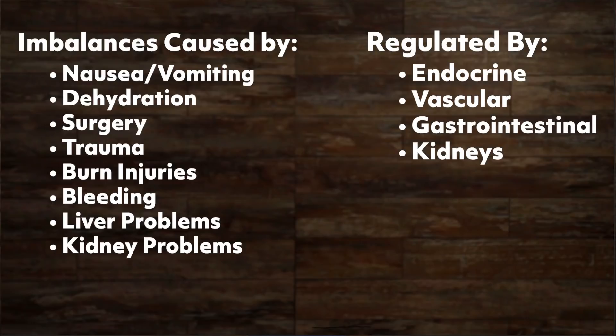Fluid and electrolyte imbalances can occur due to various causes, such as nausea and vomiting, dehydration, surgery, trauma, burn injuries, bleeding, and liver or kidney problems. The body's electrolytes are regulated by the endocrine system, the vascular system, the GI system, and the kidneys. It's important to know the normal ranges of the major electrolytes, their basic functions, and the signs and symptoms of imbalances.